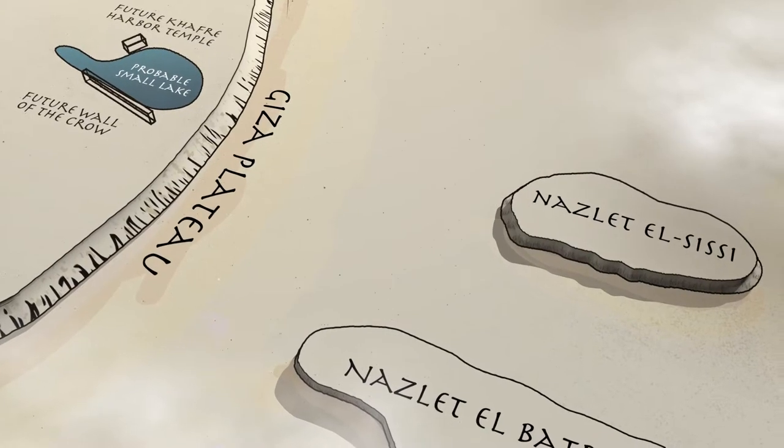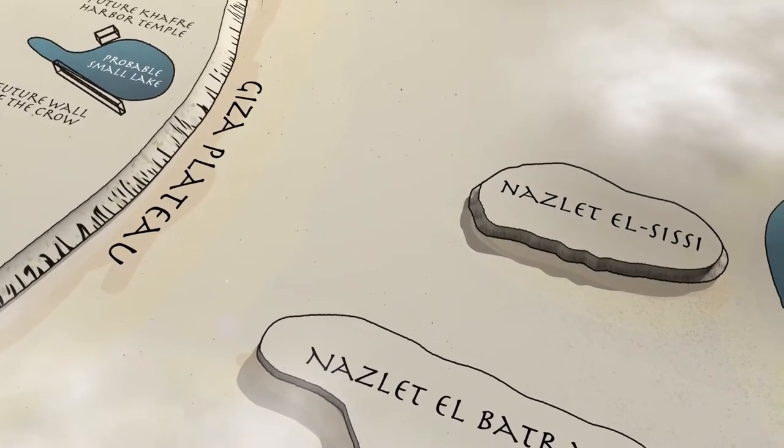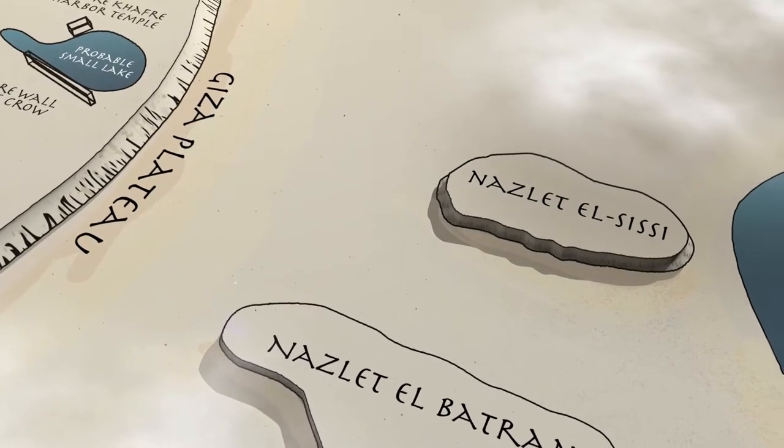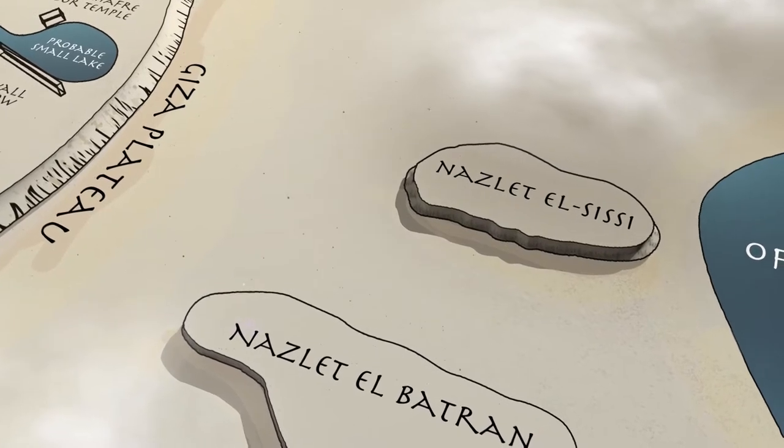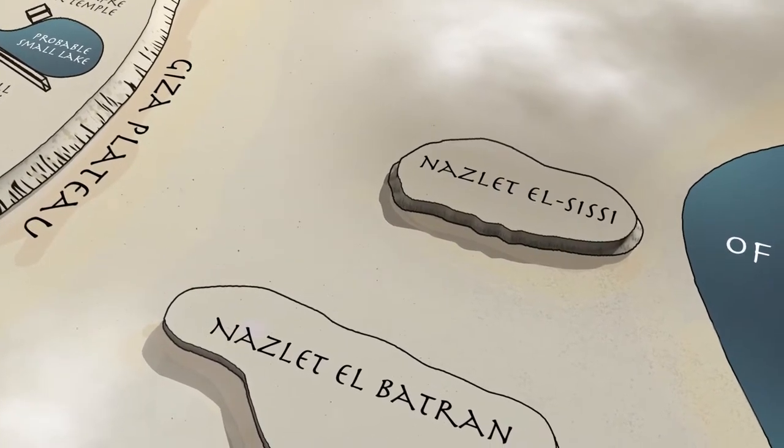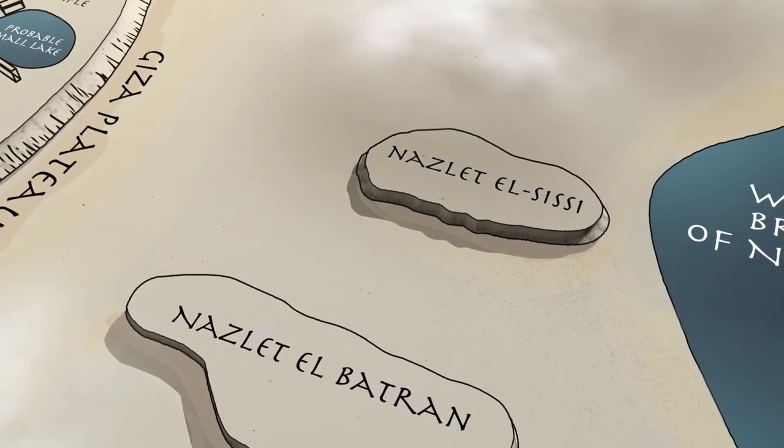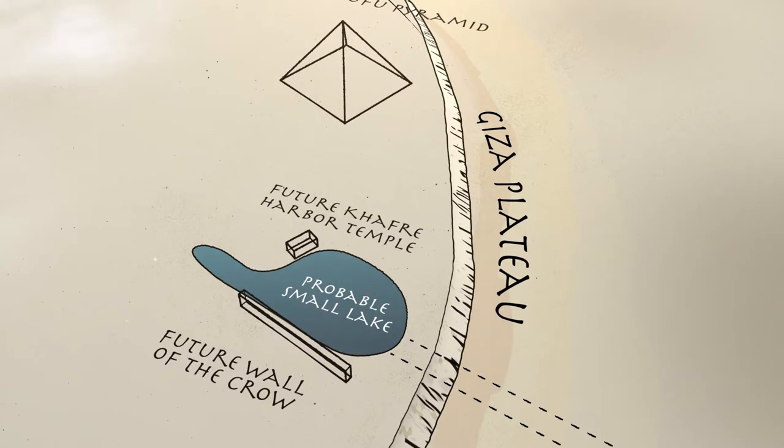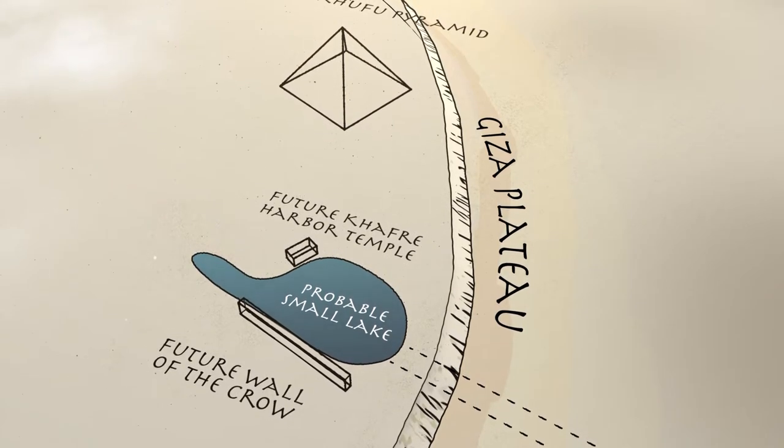At the foot of the Giza Plateau, there was likely a small permanent lake. The boreholes showed sand, silt, and clay bordering the Wall of Crow on the south, and Khafre Harbor Temple on the west. The deepest, lowest point of the basin was the same depth as the lowest level of the ancient Nile River, or Branch Channel, as it is in front of present-day Khafre Harbor Temple. The probable small lake Khufu's builders found when scouting the pyramid location would have been in this area.